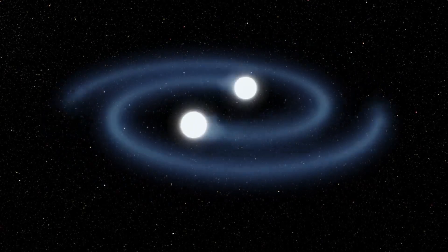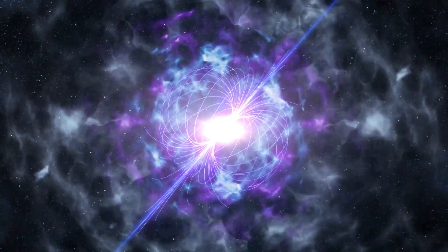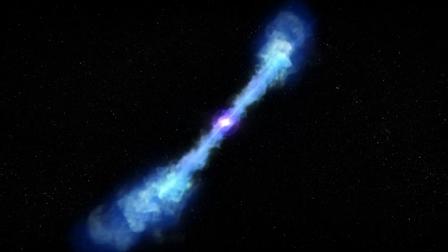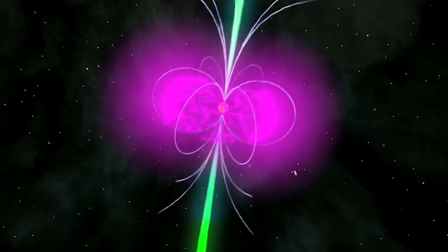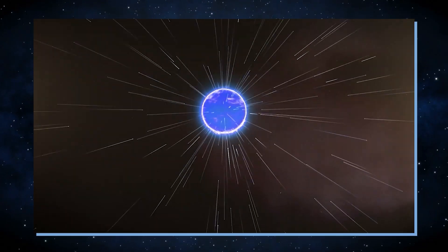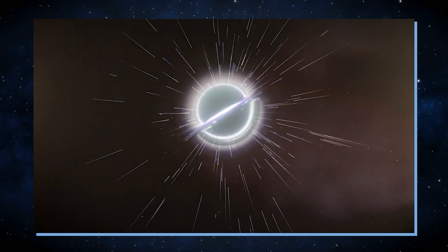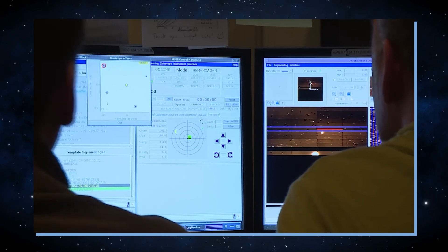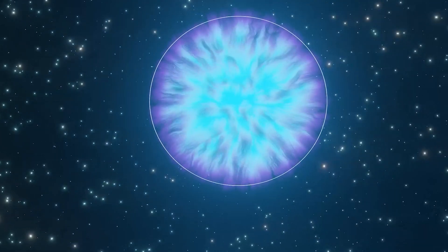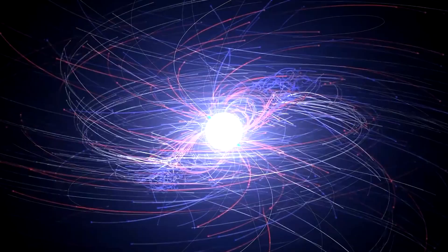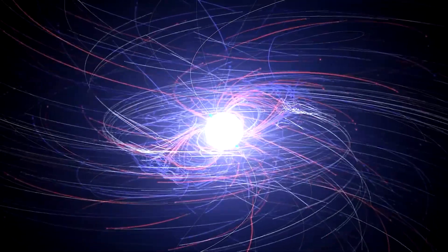One hypothesis suggests a connection between the rotational speed of the original star and the formation of magnetars. Scientists are exploring the role of the star's rotation in influencing the outcome of the supernova. Additionally, astronomers suspect that certain bursts of gamma and X-ray radiation observed over the years may be attributed to magnetars, given their exceptionally strong magnetic fields.